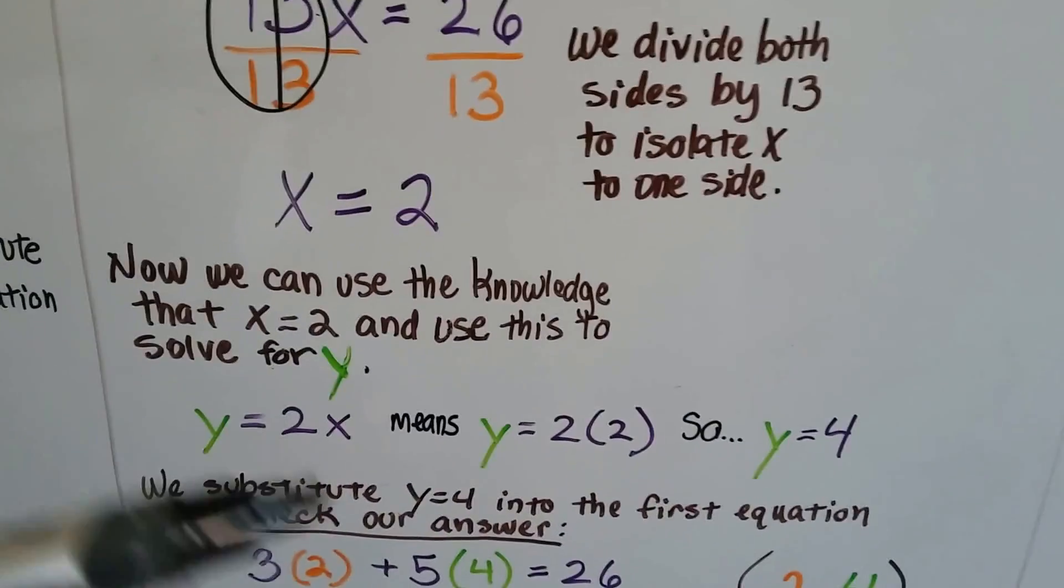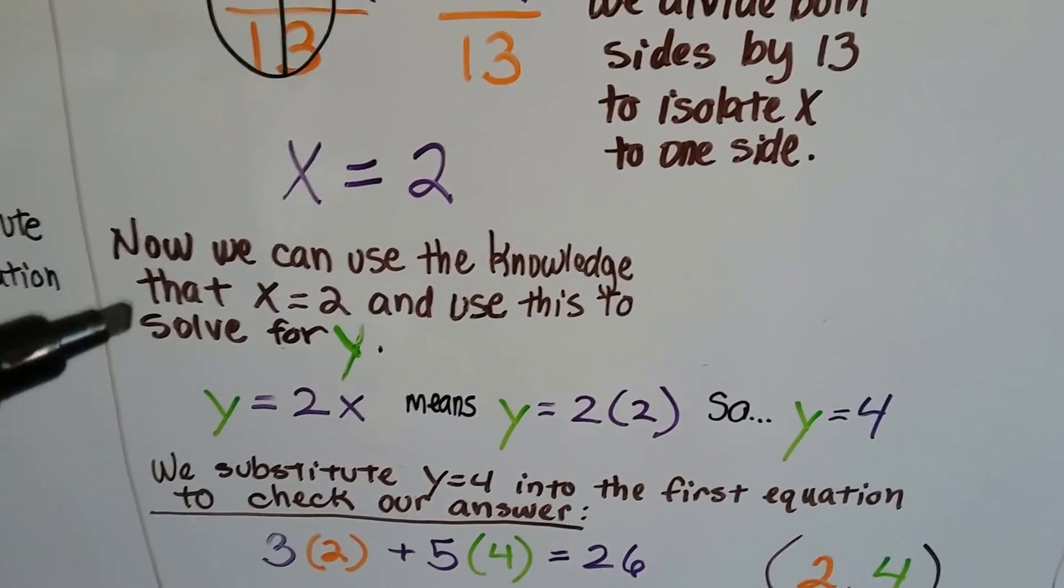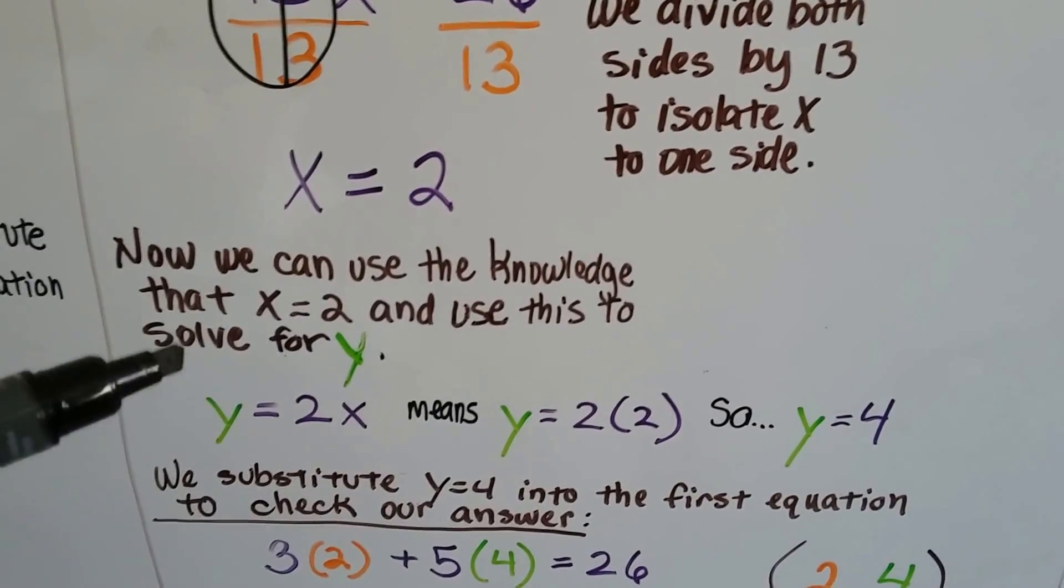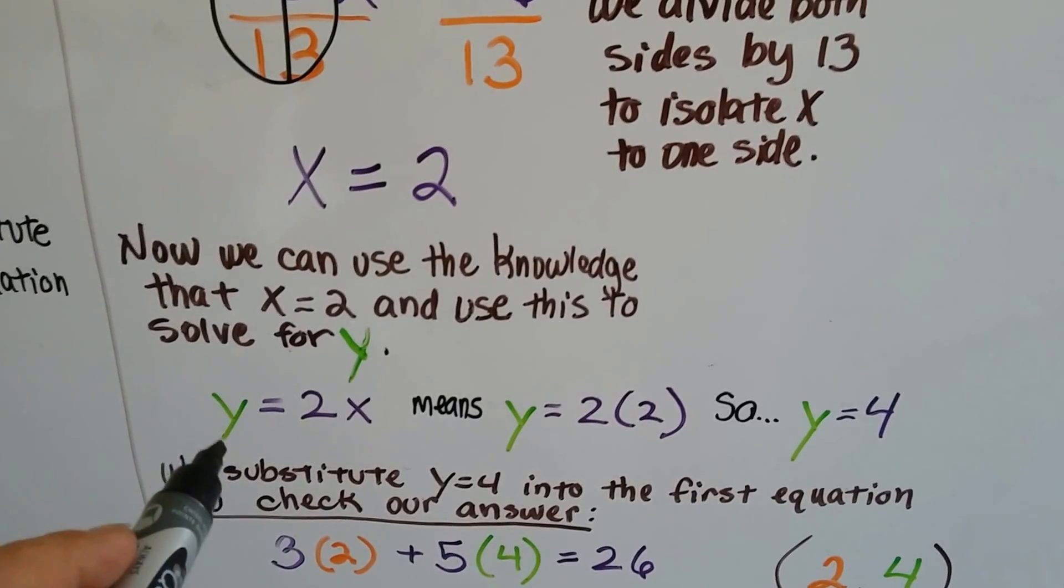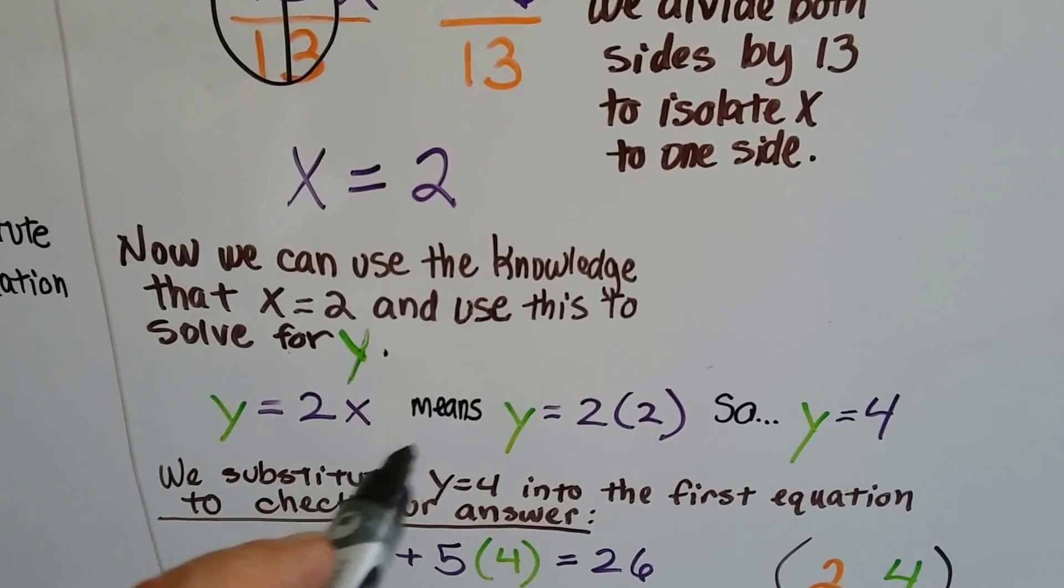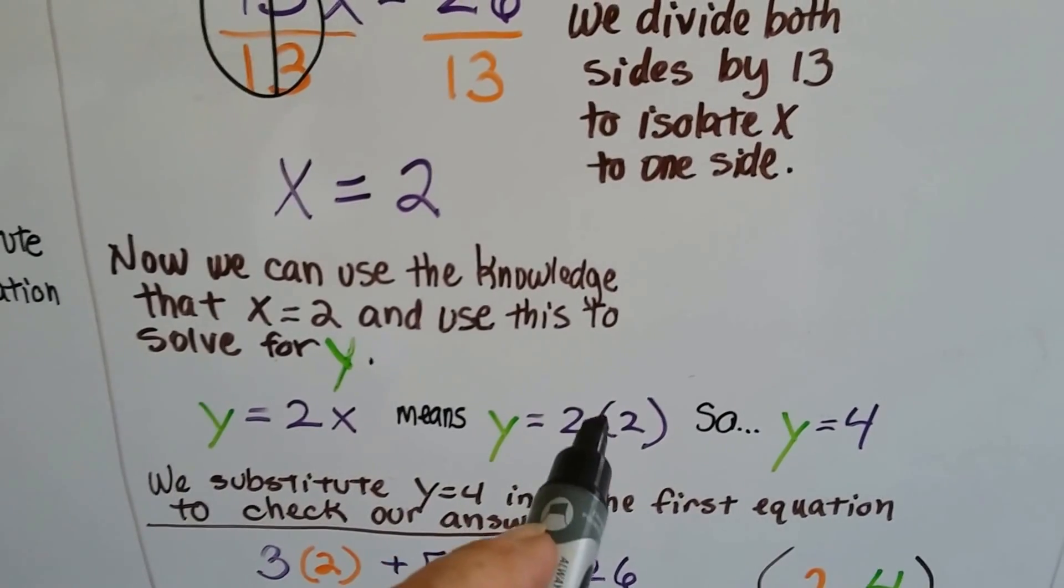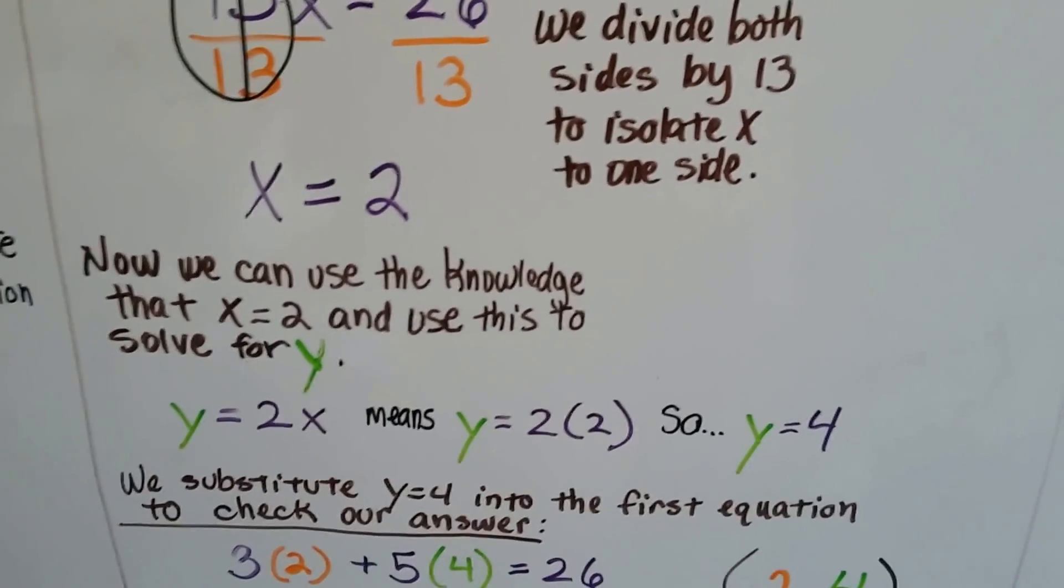We now know what x is equal to. Let's work on y. Now we can use the knowledge that this x is equal to 2 and use this to solve for y. It told us that y was equal to 2x. That means, because we now know that x is a 2, that y is equal to 2 times 2. So y is equal to 4.